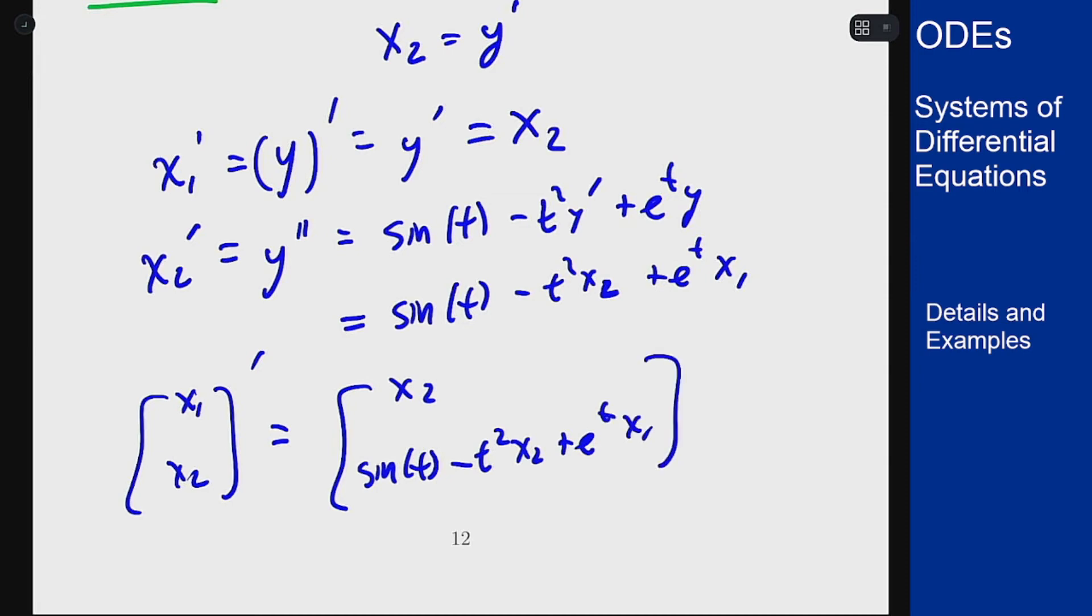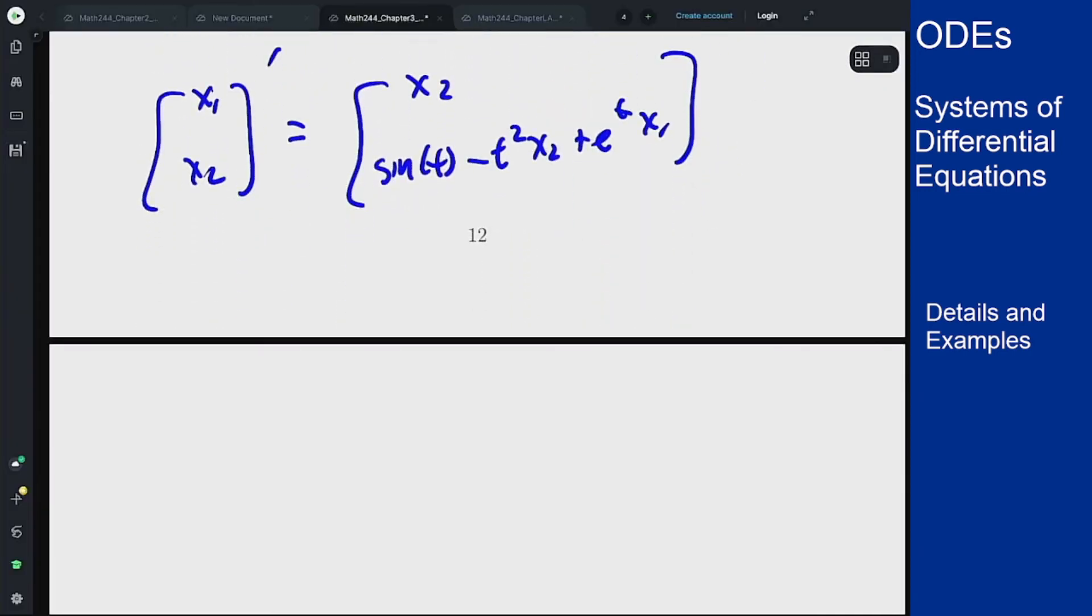And now we notice here that this system is linear because the x's are only multiplied by functions of t. They're not times each other, so I can write this in a more direct matrix form if I split up the different terms.